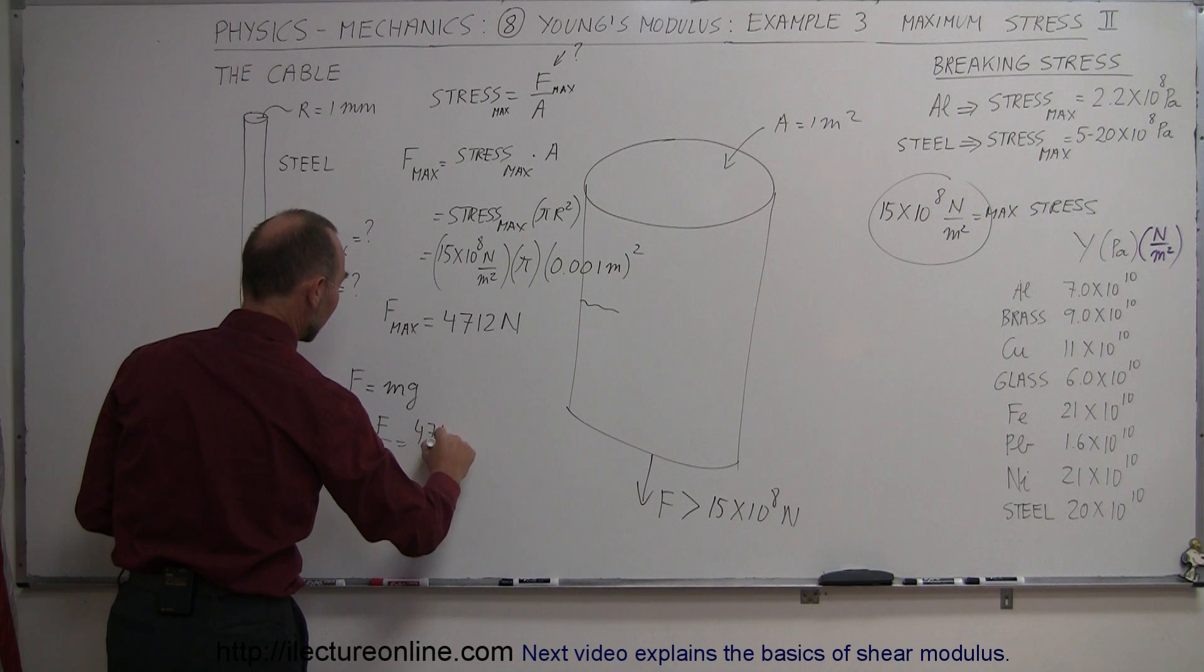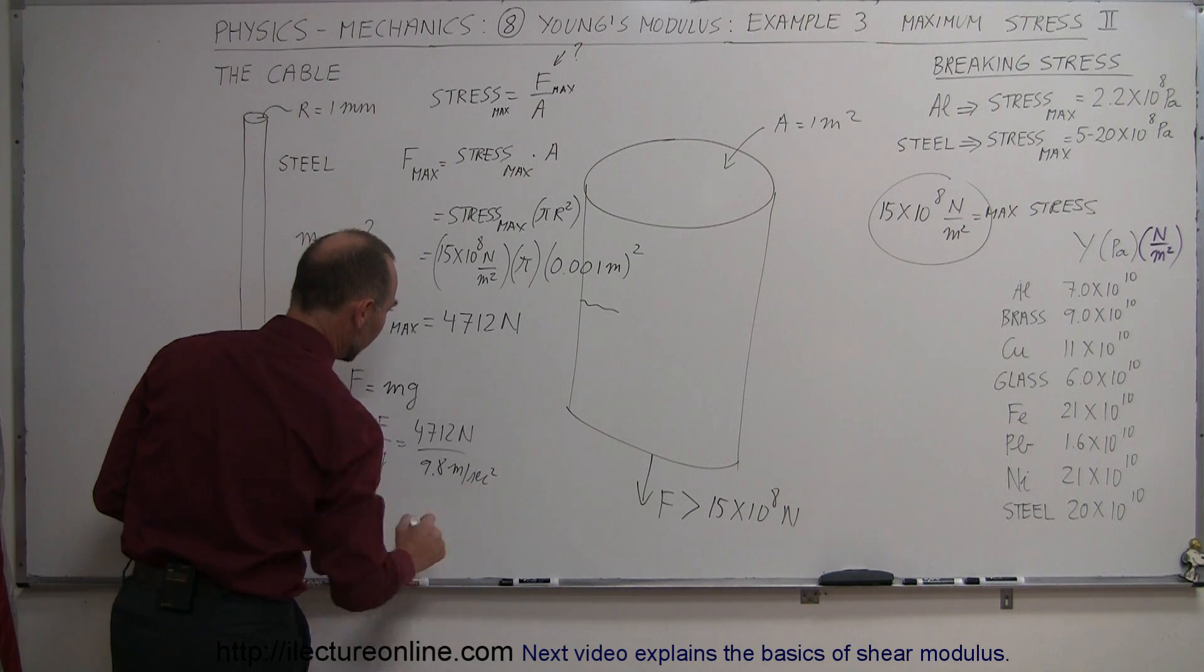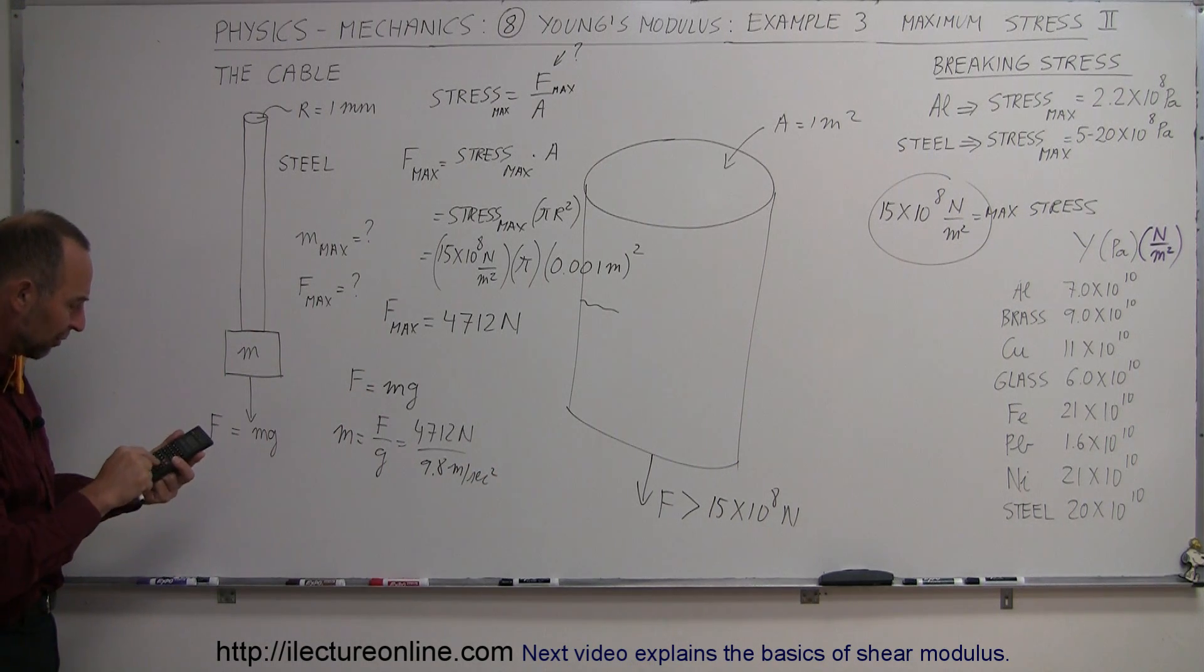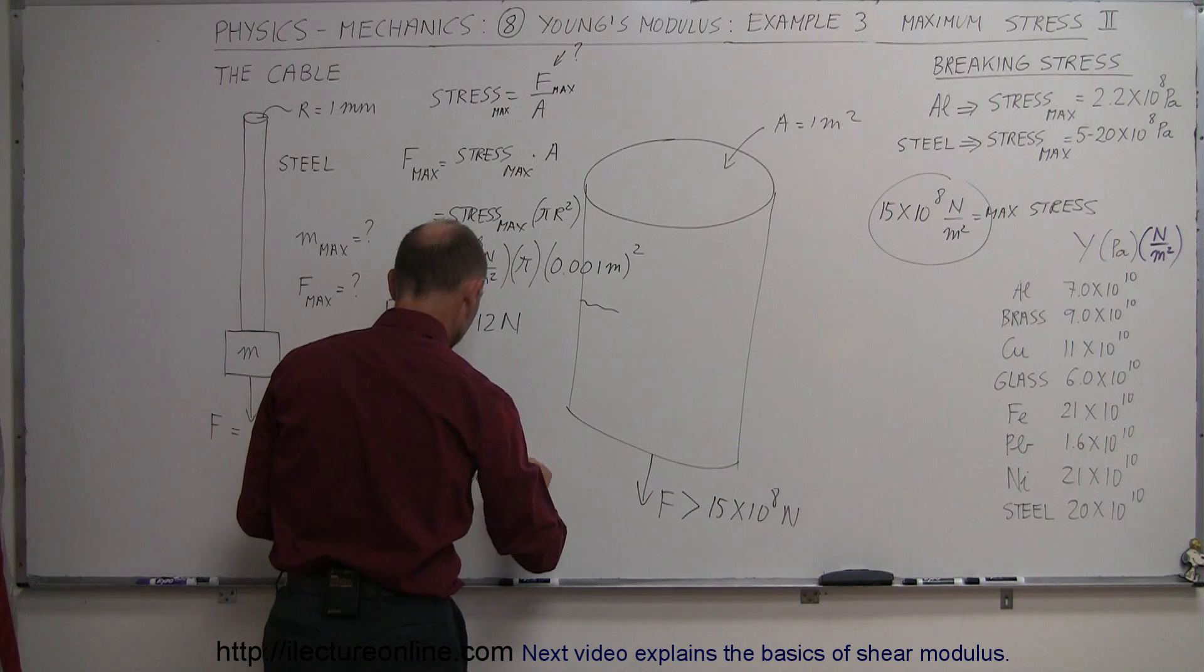Or in this case, 4,712 newtons divided by 9.8, that would be meters per second squared, and that will give us kilograms, of course. So divide that by 9.8 equals, that gives us 481 kilograms.